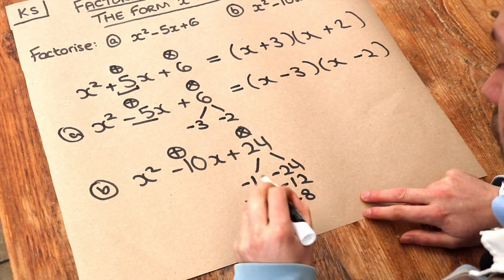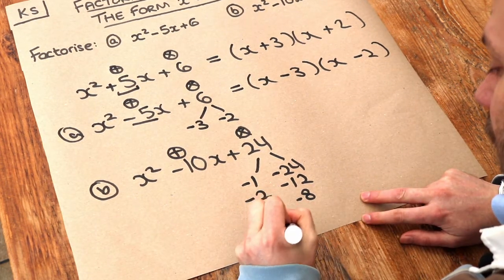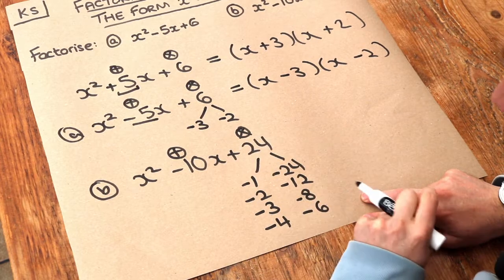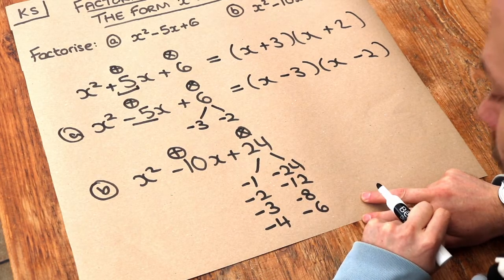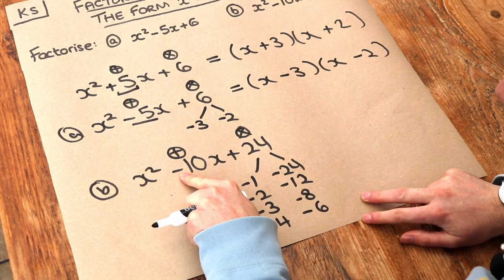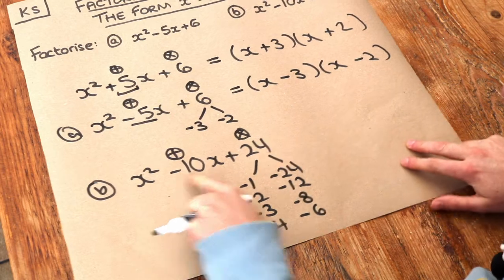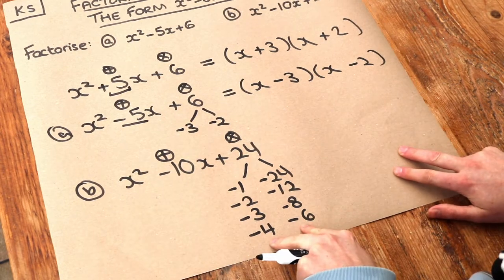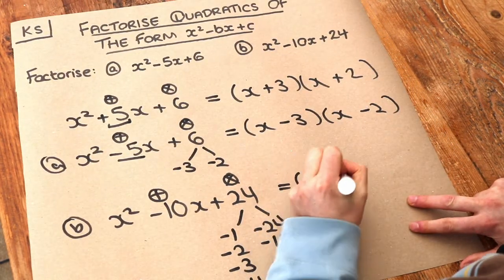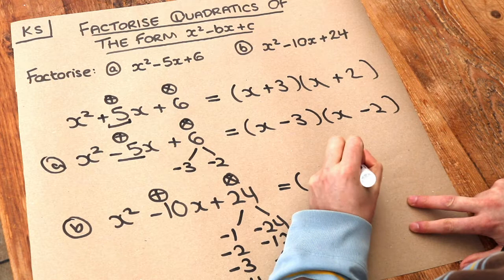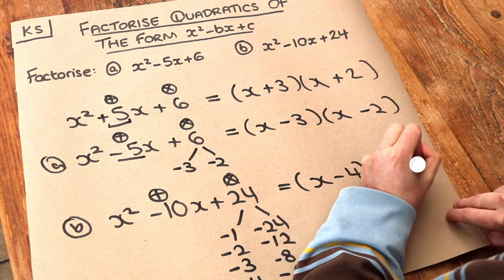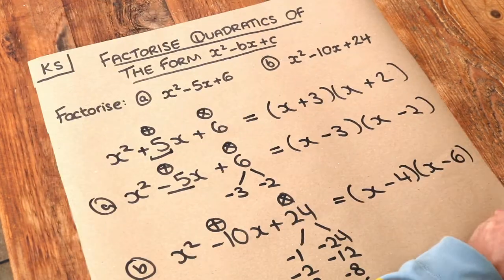What about 4 and 6? Minus 4 and minus 6 — they multiply to give 24, and they do indeed add up to give minus 10. So the two numbers are minus 4 and minus 6. So we've got x minus 4 and x minus 6, and that is the final factorization.